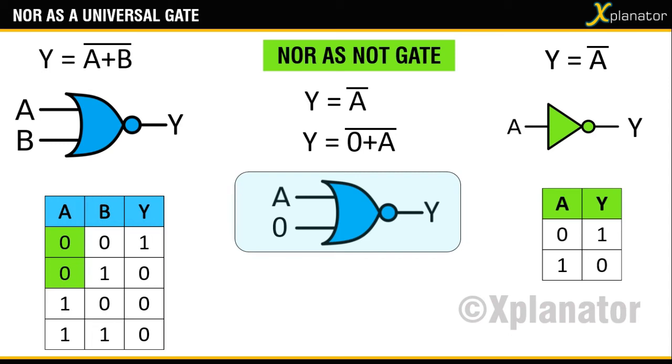So, for B equals 0, you get Y equals 1. And for B equals 1, you get Y equals 0.